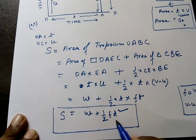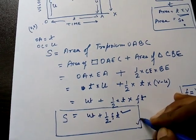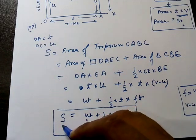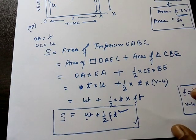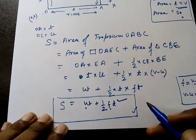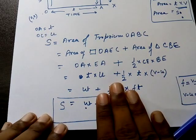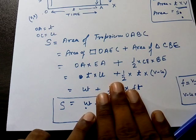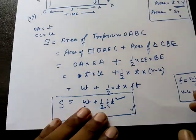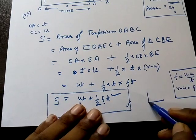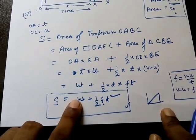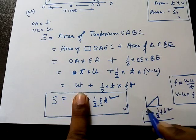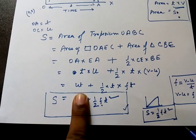So the proof is complete: S = ut + ½ft². This is the expression for a moving body with initial velocity u and uniform acceleration f. As a special case, if there is no acceleration, f equals zero, so S = ut. If the initial velocity is zero, u equals zero, so S = ½ft². Thank you for watching.